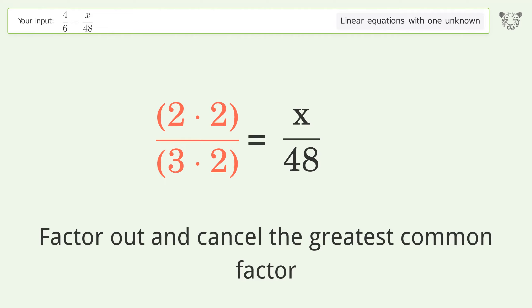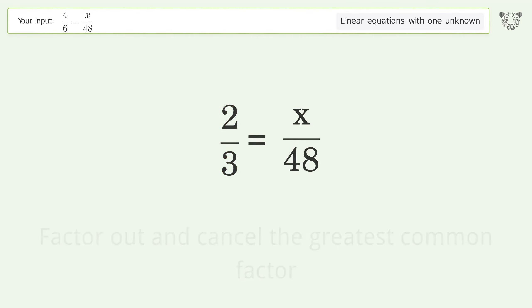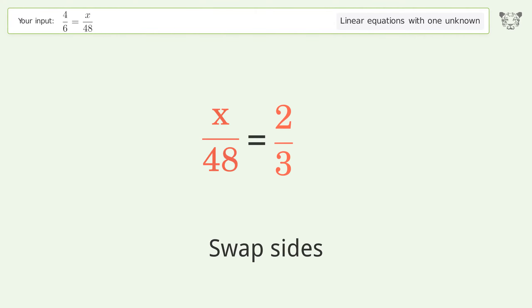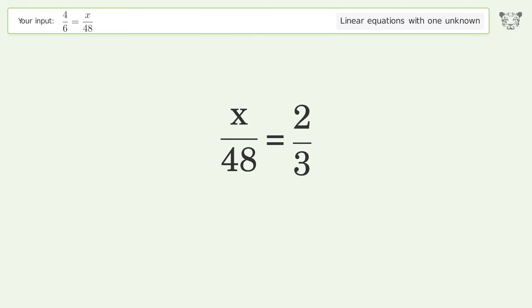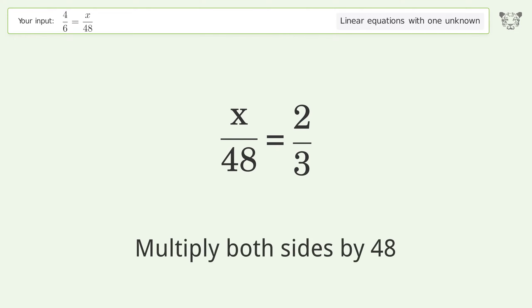Swap sides, isolate the x, and multiply both sides by 48.